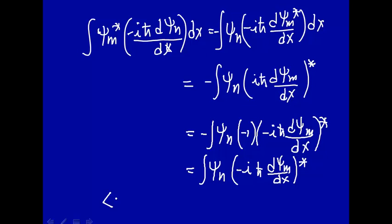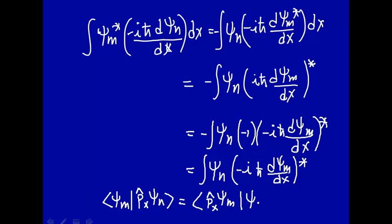Rewriting in Dirac notation: the bracket psi_m, p_x, psi_n equals the bracket p_x psi_m, psi_n — where the complex conjugate goes on the left-hand side. By this exercise, we've shown that the one-dimensional momentum operator is Hermitian, because operating on psi_n is the same as operating on psi_m with appropriate complex conjugation. This also means any operator with a first derivative needs an i in front to be Hermitian.